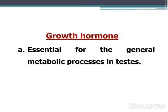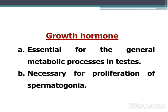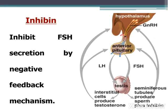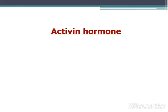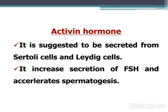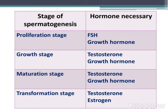Growth hormone is essential for the general metabolic processes in the testes and is necessary for proliferation of spermatogonia. Inhibin inhibits FSH secretion by a negative feedback effect. Activin is secreted from the Sertoli and Leydig cells and stimulates the secretion of FSH and accelerates spermatogenesis. A table shows the different hormones affecting each stage of spermatogenesis.